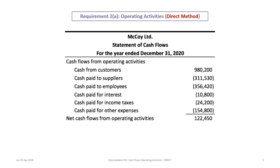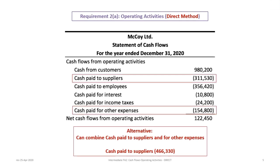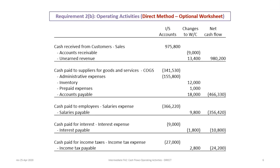An alternative approach combines cash paid to suppliers and cash paid for other expenses into a single line. Cash paid to suppliers of $311,530 and other expenses combined give an alternative total of $466,330. This combined presentation is acceptable and can simplify the statement.